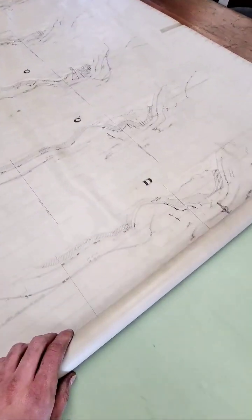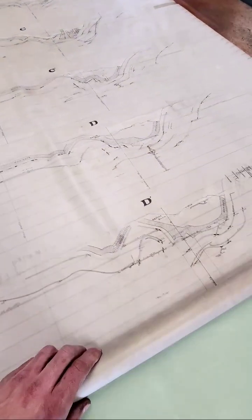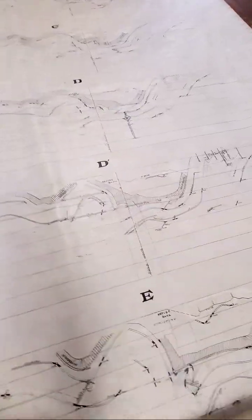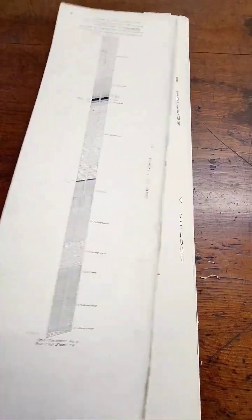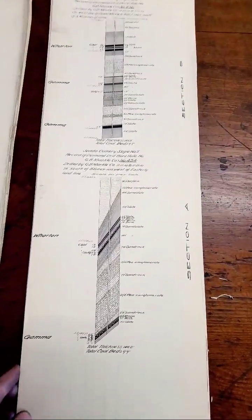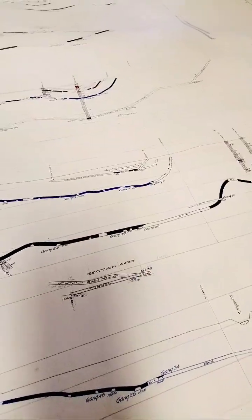Here is a set of cross sections showing a vertical view of all the coal seams. And here you can see a set of hand-drawn core logs.